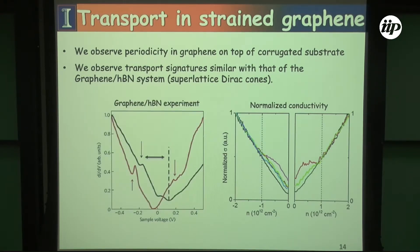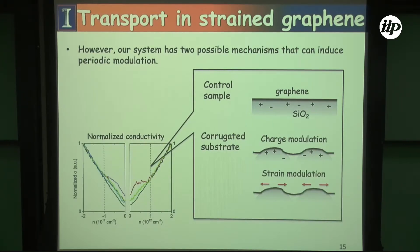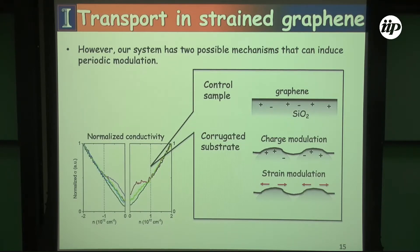Comparing with the boron nitride experiment, you can see some similarities between the two. The key question then was: how can we rule out potential modulation rather than strain as the dominant mechanism? We need to make sure that we have strain. For silicon dioxide, the main source of charge modulation is going to be from the contact regions between the draped graphene and the silicon nanospheres.